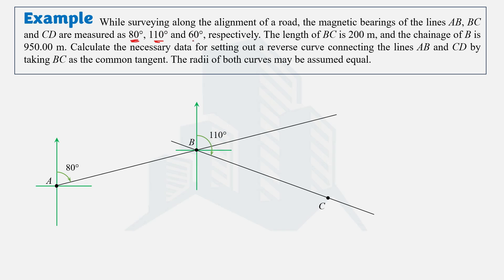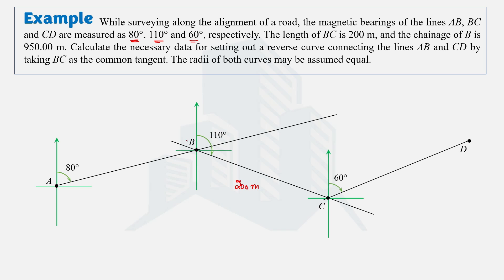The last line CD has a bearing of 60 degrees. Drawing the true north and then the CD line gives us that direction. We are also given that the length of BC is 200 meters, and the chainage at point B is 950 meters.